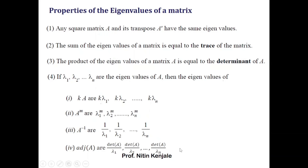From property 4, you can observe that eigenvalues of a scalar multiple of a matrix, any positive power of the matrix, the inverse of the matrix, or the adjoint of a matrix can all be obtained directly from the eigenvalues of the given matrix A. You don't need to actually find what A raised to m, A inverse, or adjoint of A is.